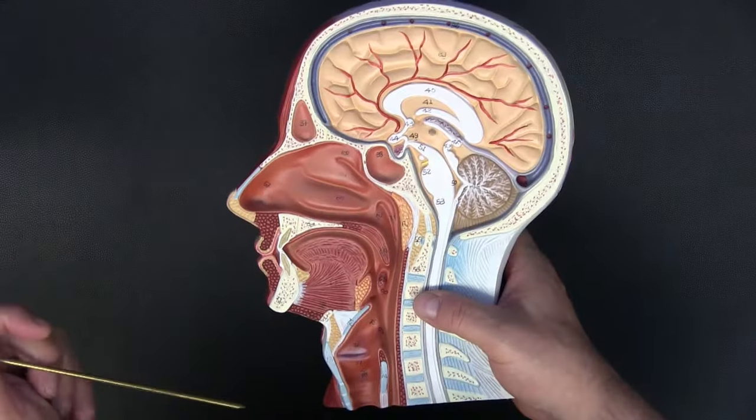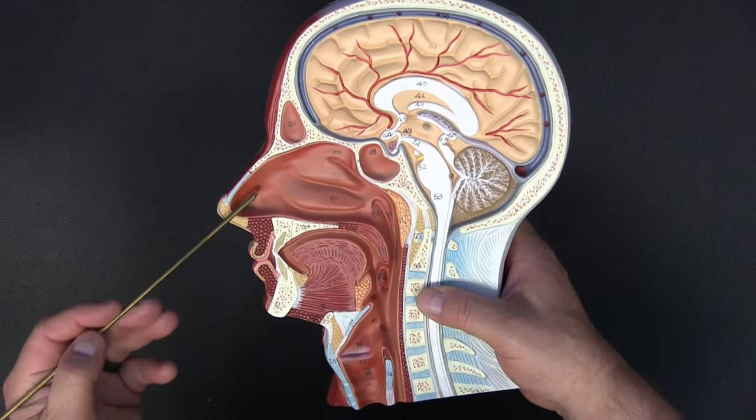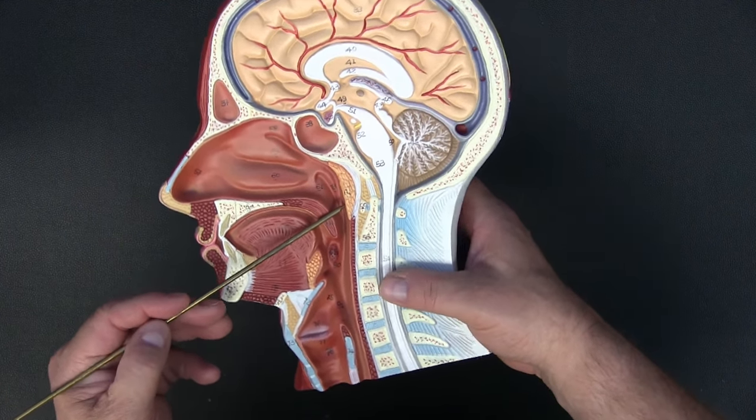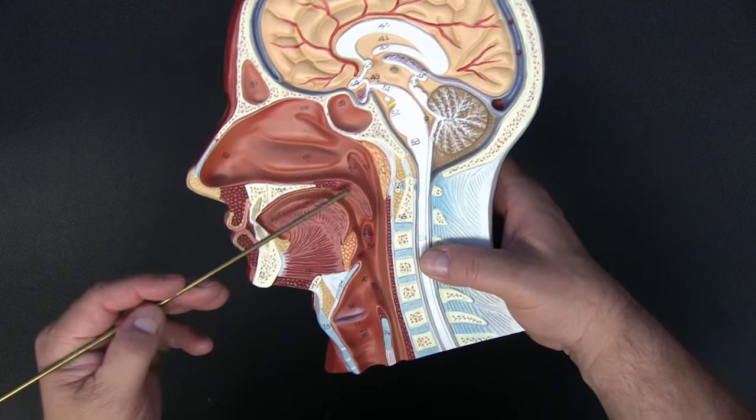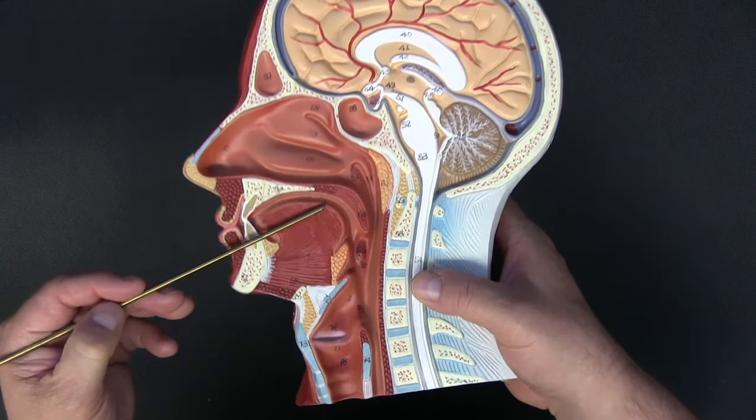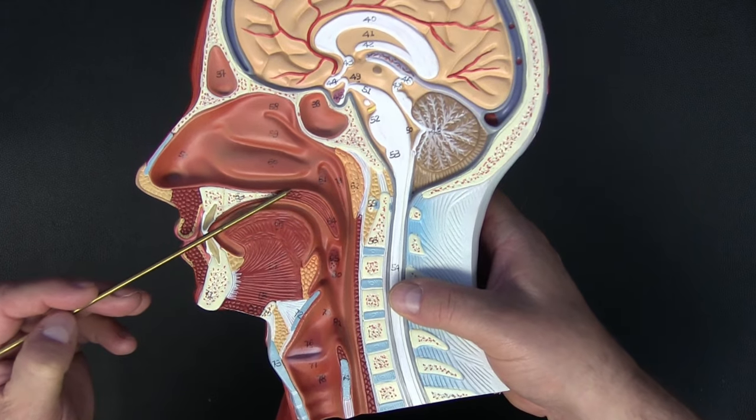So as air is inhaled through the nostril, it's going to pass through the vestibule, the nasal cavity, through the choana, into the nasopharynx. I want you to note that separating the nasal cavity from the oral cavity is the hard, bony palate, and then the soft palate here, made up of muscle.